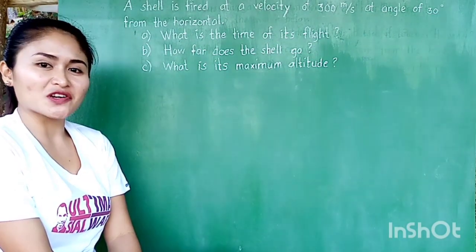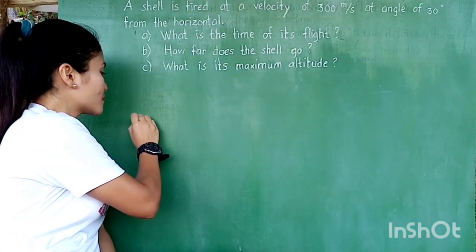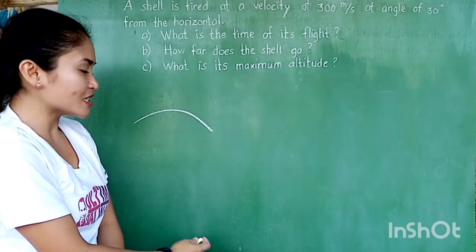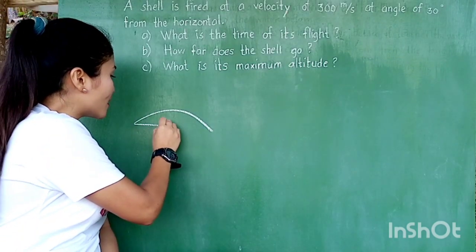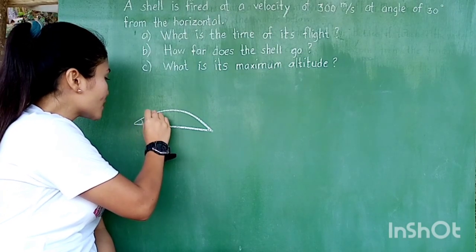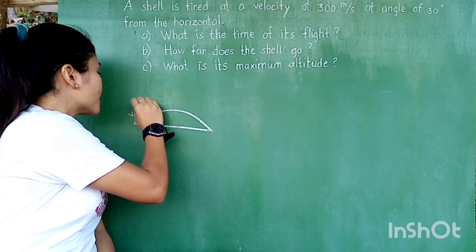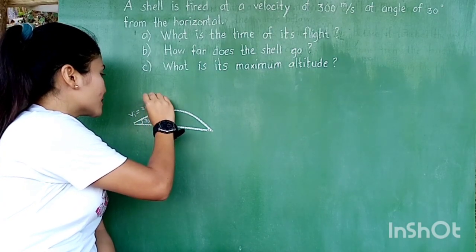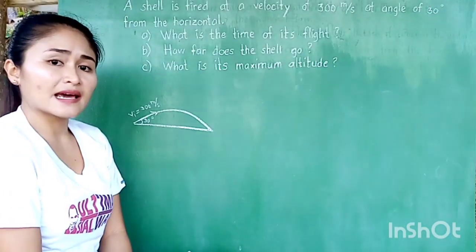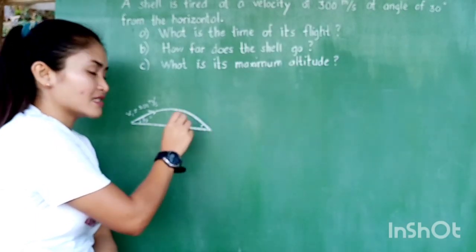First things first, we need to sketch the situation of the problem. The shell is fired at an angle of 30 degrees from the horizontal with a velocity of 300 meters per second. Since air resistance here is neglected, we assume that the angle here is equal to the angle on this side.